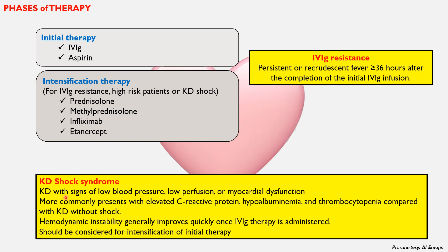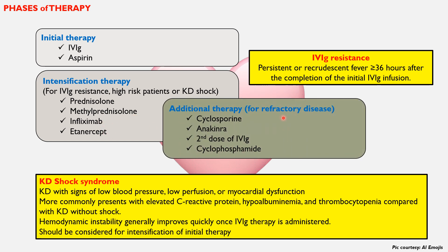Kawasaki disease shock presents with signs of low blood pressure, low perfusion, or myocardial dysfunction, and more commonly with elevated CRP, hypoalbuminemia, and thrombocytopenia compared with KD without shock. Hemodynamic instability generally improves quickly once IVIG is administered. Intensification of therapy means adding prednisolone, methylprednisolone, infliximab, or etanercept. Additional therapy for refractory disease includes cyclosporine, anakinra, a second dose of IVIG, and cyclophosphamide.